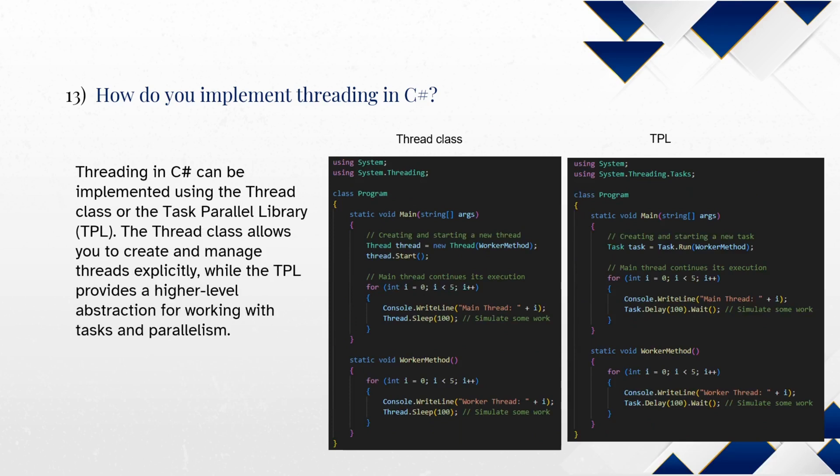How do you implement threading in C-Sharp? Threading in C-Sharp can be implemented using the Thread class or the Task Parallel Library (TPL). The Thread class allows you to create and manage threads explicitly, while the TPL provides a higher level abstraction for working with tasks and parallelism.